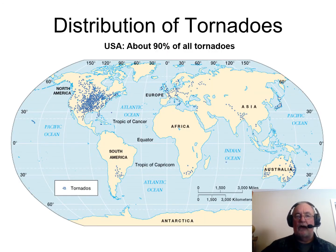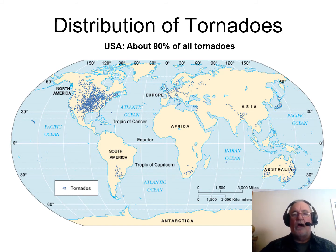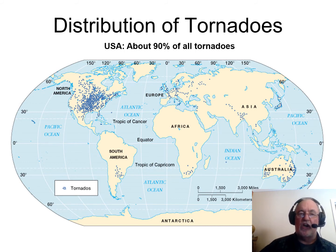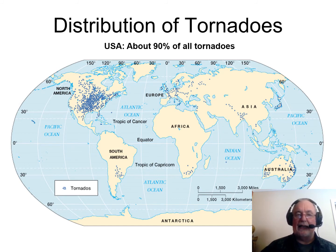Here's a distribution of global tornadoes. The great majority — 80 to 90 percent — are found in the USA. Narrowing in on the darker areas, each representing multiple tornadoes, we have the Southern Great Plains as the target area. If you want to study tornadoes, you'd want to go to the Southern Great Plains — the area we call Tornado Alley.